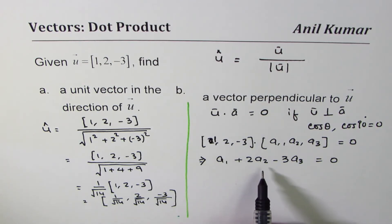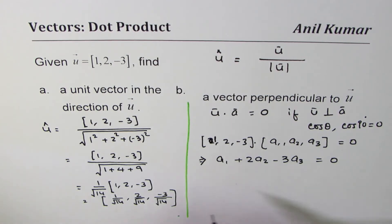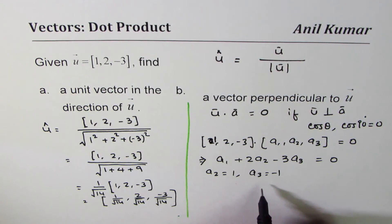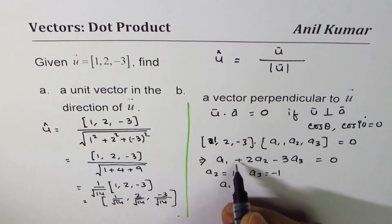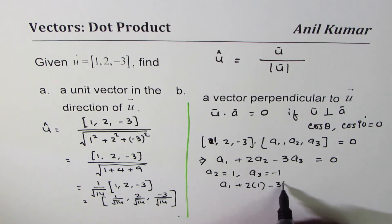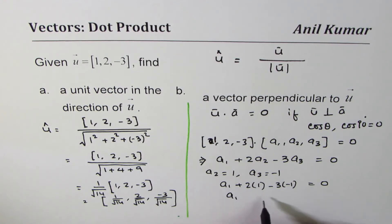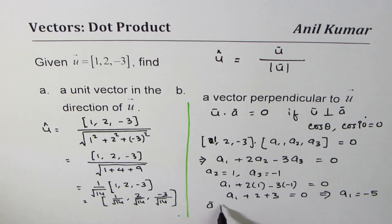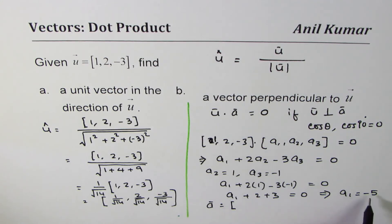To find one, let's take specific values: let a2 = 1 and a3 = -1, then calculate a1. Substituting into a1 + 2(1) - 3(-1) = 0, we get a1 + 2 + 3 = 0, which implies a1 = -5. So the vector a is (-5, 1, -1).